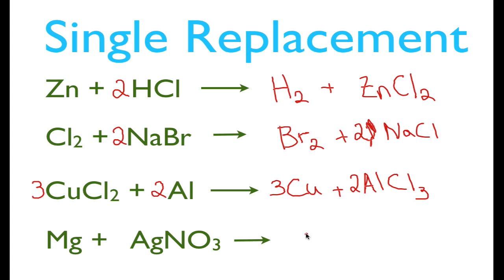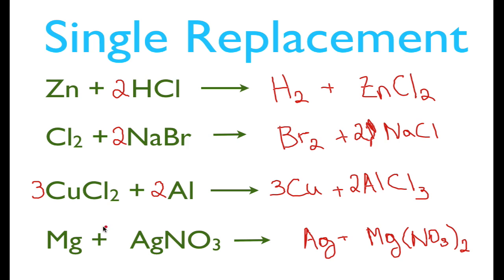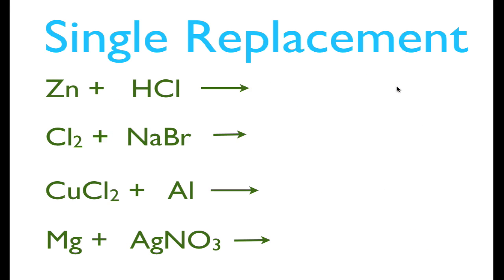In the magnesium and silver nitrate single replacement reaction, magnesium kicks out the silver, giving us silver by itself plus magnesium nitrate. Magnesium is +2 and nitrate is -1, so the formula is Mg(NO₃)₂. We have two nitrates, so we need 2 AgNO₃ on the reactant side, giving us 2 silvers — so we put a 2 in front of Ag on the product side. That leaves one magnesium on each side, and the equation is balanced. On each side: lone element and compound.